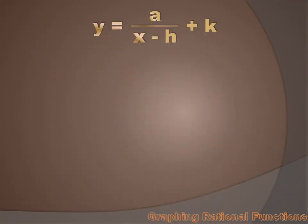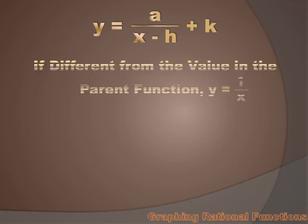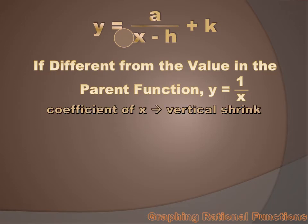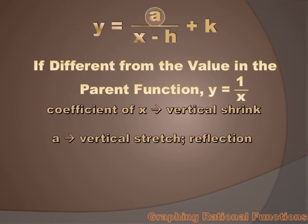Now let's summarize what we've learned. Let's talk about what changes in each of these values in the generic equation creates to the graph relative to the parent equation y equals 1 over x. If we change the coefficient of x, it's going to create vertical shrink and bring that graph closer to the origin. If we make changes in our a value, it's going to create vertical stretch and pull the graph away from the origin. And if our a value is negative, it's going to reflect the curve around the y-axis.